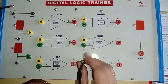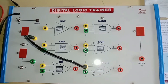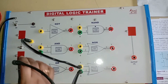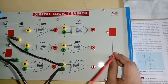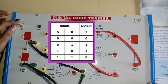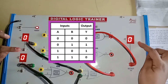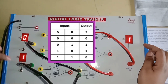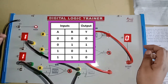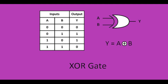Next is the XOR gate. With input 0,0 the output is 0. With input 0,1 the output is 1. With input 1,1 the output is 0. Thus the XOR gate is verified.